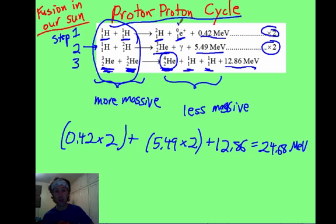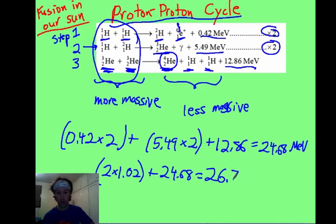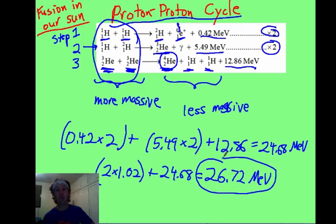In fact, you also need to include these positrons that are going to combine with electrons, and they're going to get 2 times 1.02 MeV. So you add that to your 24.68, and you're going to end up with 26.72 MeV every time that proton-proton cycle happens inside our sun through fusion.